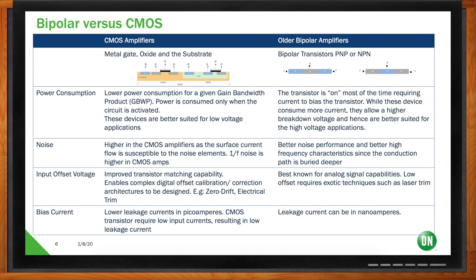There is another advantage: because you have high voltage breakdown with bipolar transistors, you're able to use them for higher voltage applications. On the CMOS side, these are better suited for low voltage applications — that's a little bit you give up. The other topic is noise. With CMOS amplifiers, a lot of the current flows close to the surface, making them susceptible to external noise. 1/f noise is generally higher in CMOS amplifiers as well.